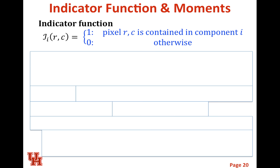In order to solve this, we need a few mathematical tools. In particular, we need something called an indicator function. The indicator function is given by capital script I, subscript lowercase i. It's a function of R and C, and it returns a one if the pixel RC is contained in component i, and otherwise gives a zero. When you apply this to an image, it will only light up the ith component — everything else will be hidden. It's a handy tool.